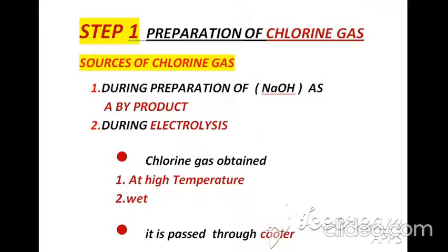In the first manufacturing step we need chlorine gas, and that chlorine gas is produced through two sources. In the first source we get chlorine gas as a by-product during sodium hydroxide preparation, and in the second method we get chlorine gas during the electrolysis process.